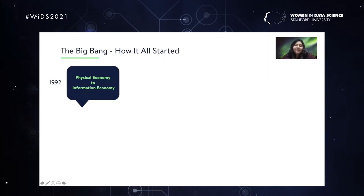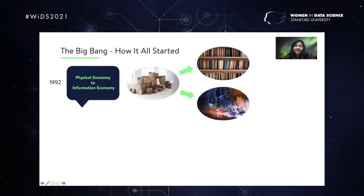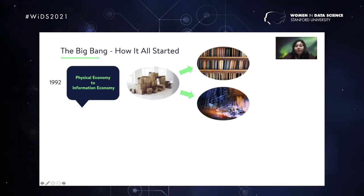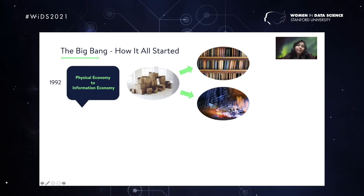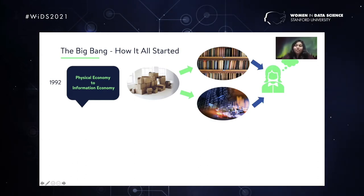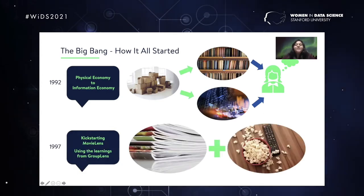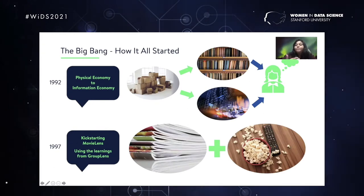The emerging technology of applied recommender systems started sometime in the early 1990s, when visionaries understood that the world is changing from a physical goods economy to an information economy. In future, companies would be selling information to customers in exchange for revenue. As the amount of information boomed, it was imperative to match the right information to the right individual. The first industry to kickstart this was the entertainment industry, where users were asked to rate a movie or news article, and in exchange were recommended new movies or articles by these recommender systems.